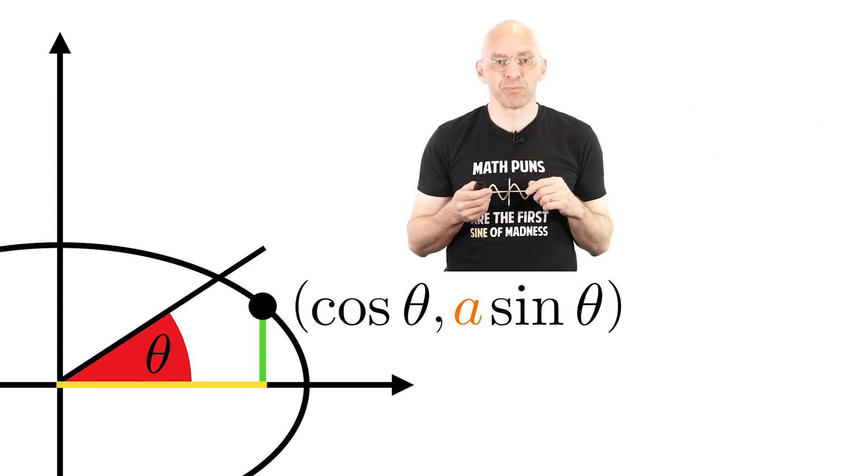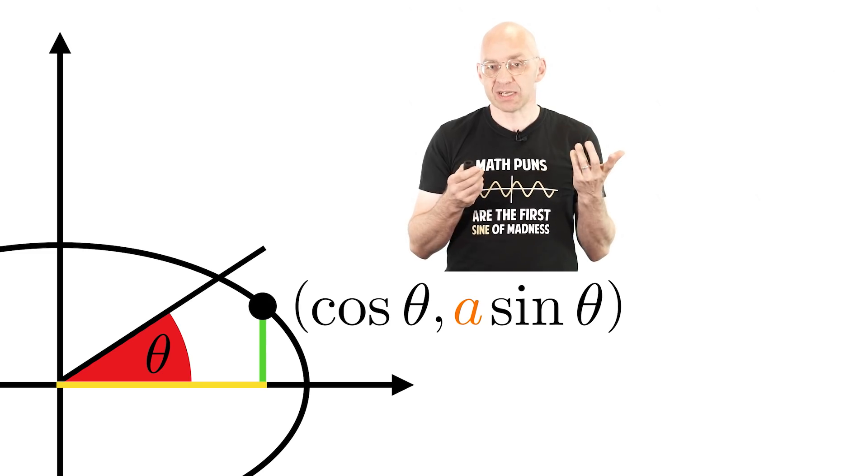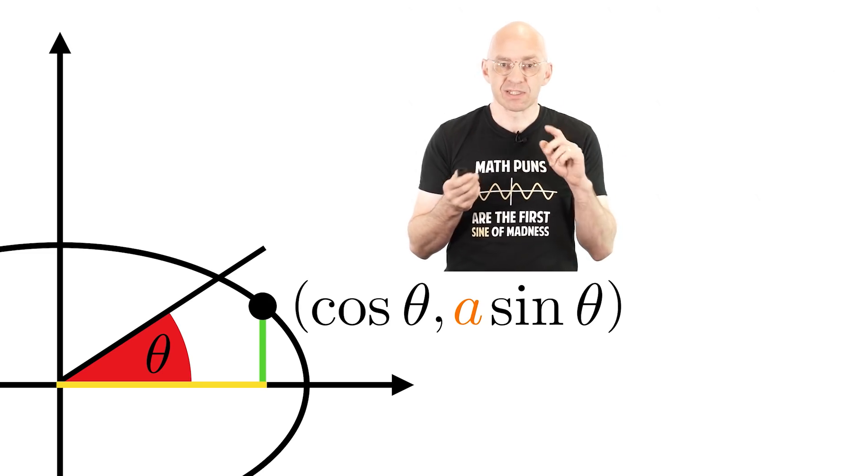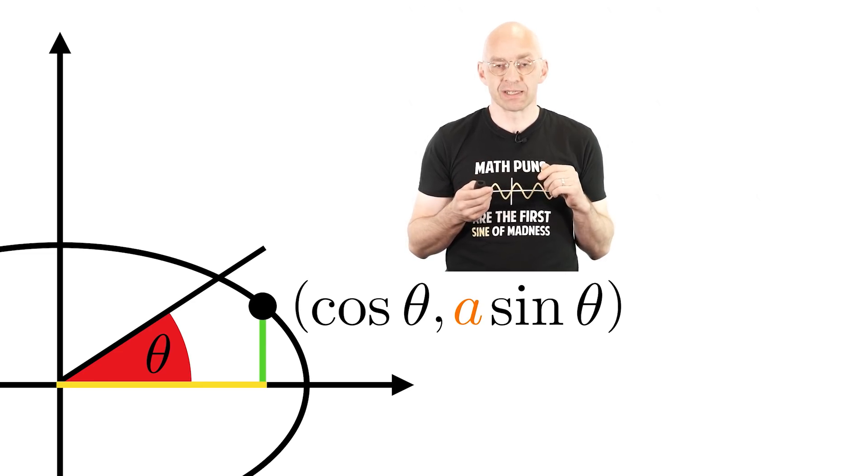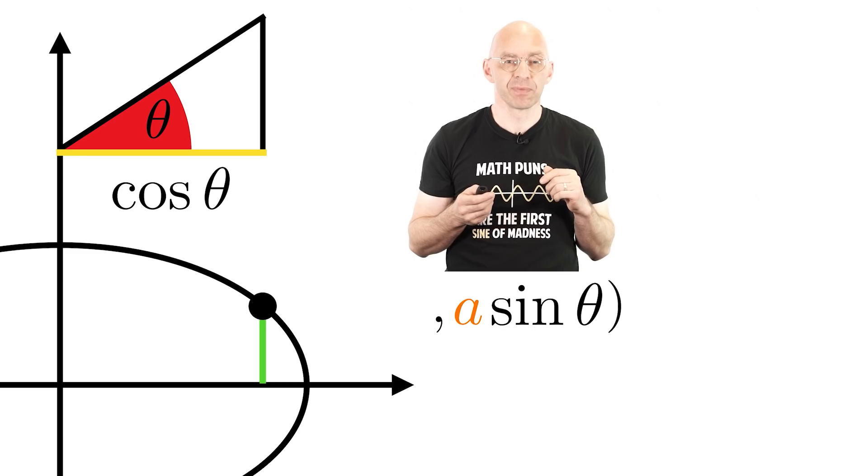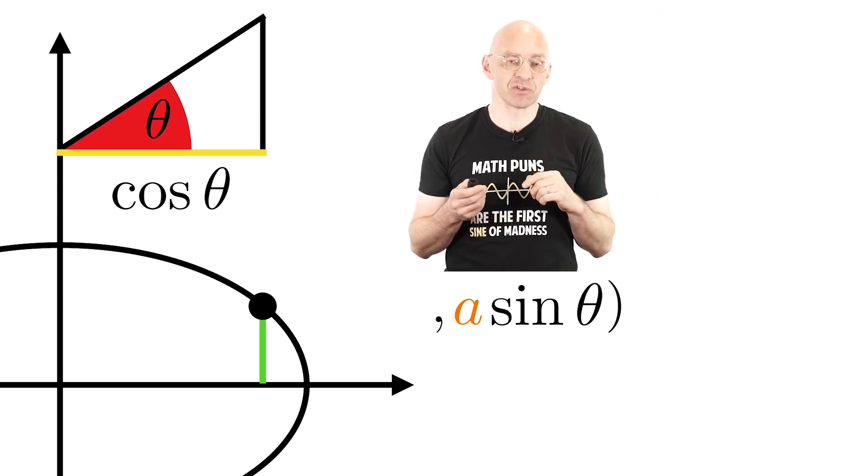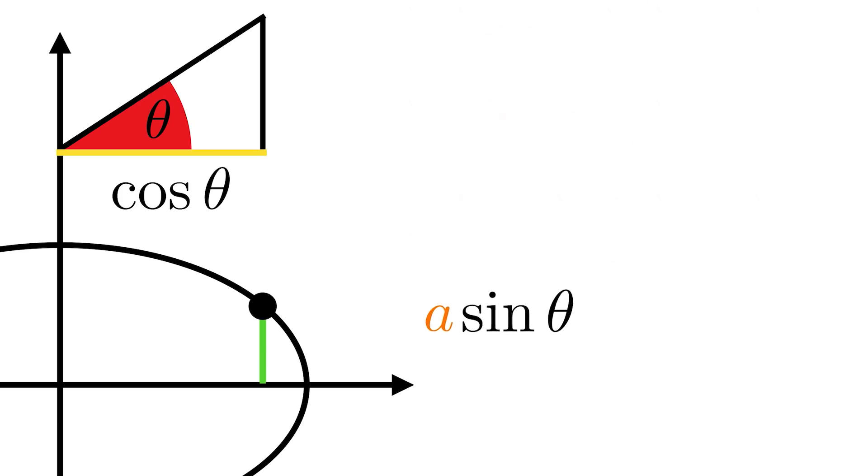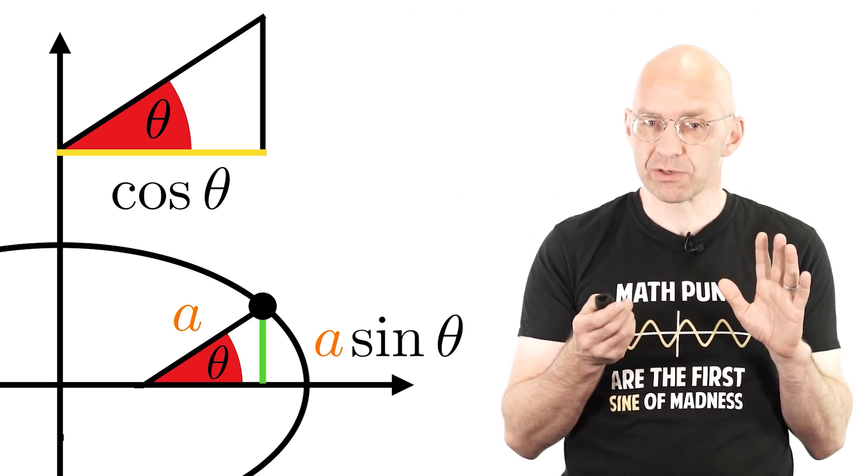As theta varies, the point sweeps out our ellipse and so this gives a parametrization of the ellipse. The theta is the theta of the original circle. We can still clearly see the x-coordinate cos theta of the original triangle in the ellipse. So there we go. We can also visualize the y-coordinate in a scaled-down triangle with hypotenuse a, like this. Ponder this for a moment. All under control. Great.